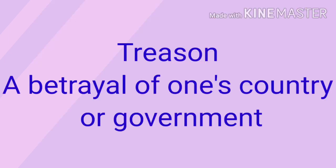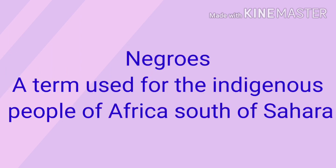Next is Treason: it was a betrayal of one's country or government — in Hindi, 'Desh Drogh.' The charge of treason was imposed on King Louis XVI. Next, Negroes was a term used for the indigenous people of Africa south of the Sahara. However, it is important to note that this word has been very offensive and today you cannot use such language to refer to Africans.